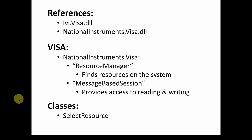Looking through the example solution, there are important things to extract. We don't want all the code — just the key parts. There are two DLLs we need to add as references: ivi.visa.dll and NationalInstruments.visa.dll. From the NationalInstruments.visa.dll there are two main functions we'll need: the first is the Resource Manager, which discovers USB or Ethernet-connected instruments like oscilloscopes and signal generators.